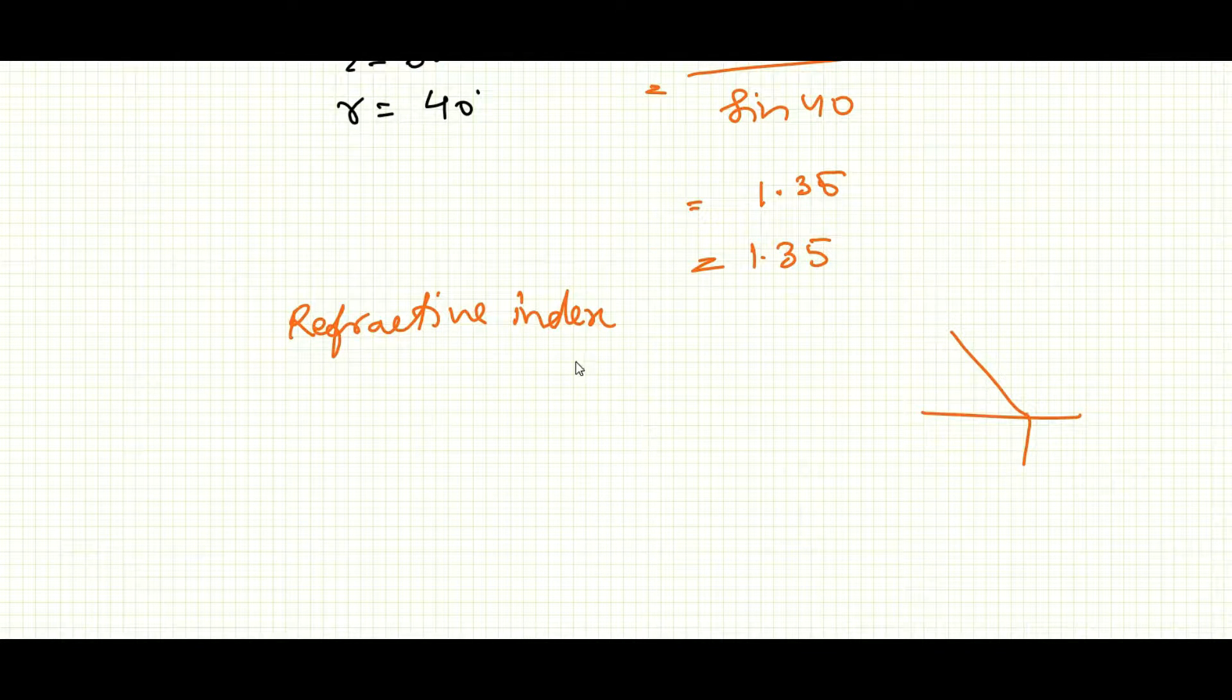Keep in mind that vacuum is taken as reference medium for refractive index of any medium. Here it can be written as 1 mu 2 or air mu glass. This is equal to 1.35. That means air mu glass.